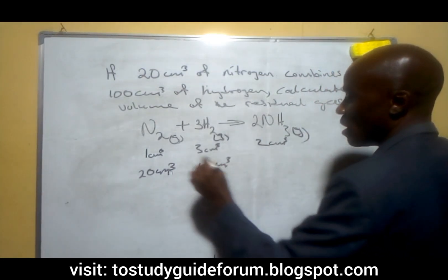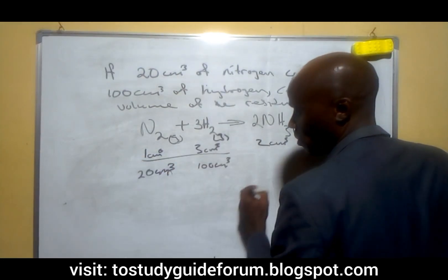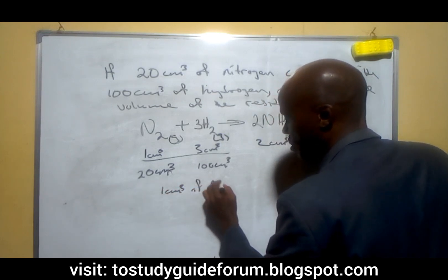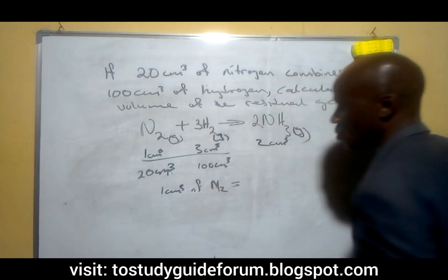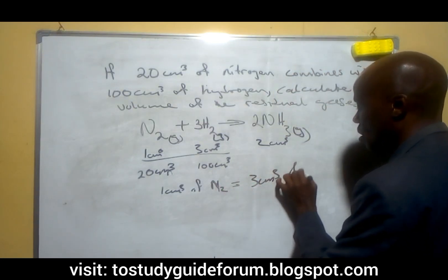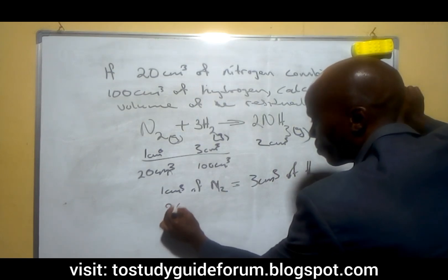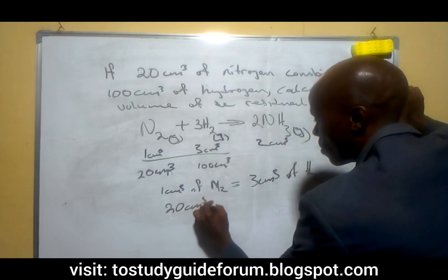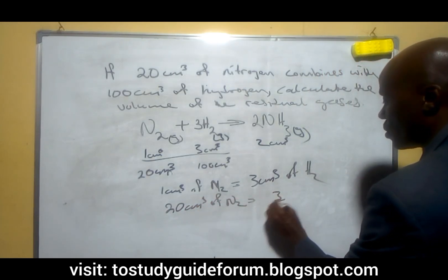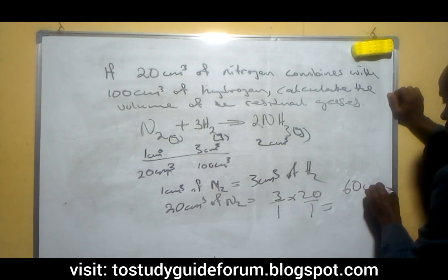From this stoichiometric relationship, 1 cm³ of nitrogen will combine with 3 cm³ of hydrogen. So 20 cm³ of nitrogen will require 3/1 × 20, which gives us 60 cm³ of hydrogen.